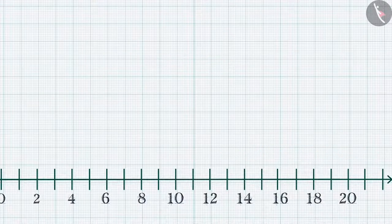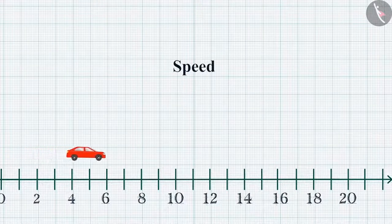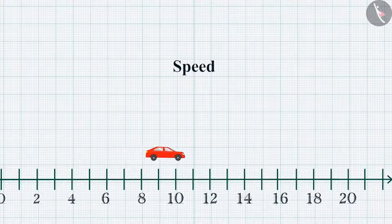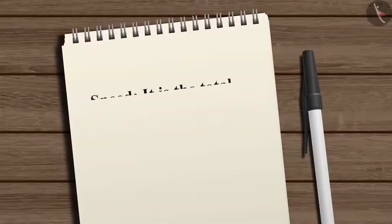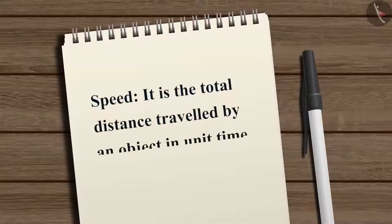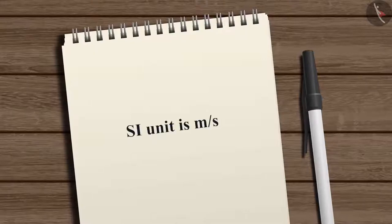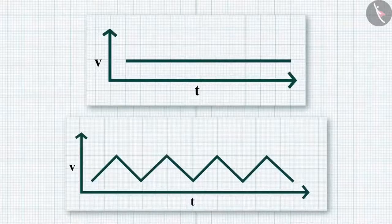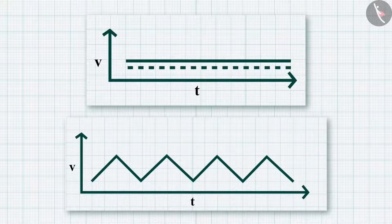Here comes the concept of speed, which is the measurement of the rate of motion. It is the total distance traveled by an object in unit time, and its SI unit is meter per second.